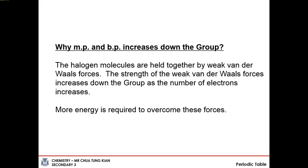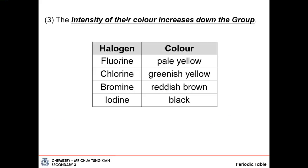Why do melting and boiling points increase down the group? The strength of Van der Waals forces depends on the number of electrons. As you go down the group, more electrons means more energy required to overcome these forces, so melting and boiling points increase. The color intensity also increases going down the group — halogens become darker in color. Fluorine is pale yellow, and astatine is black. The color intensity increases down the group.